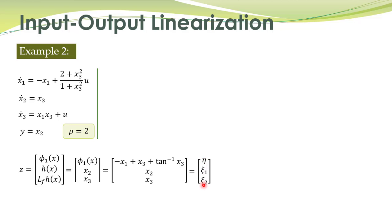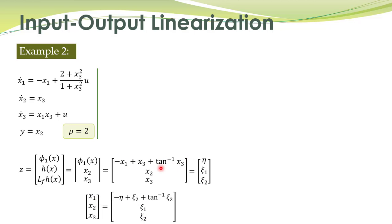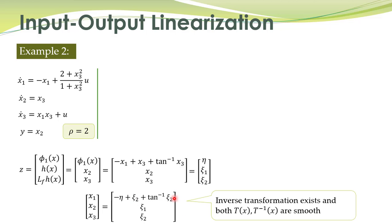The state variables are named eta, xi1, xi2 as before. The inverse transformation shows x2 equals xi1, x3 equals xi2, and x1 is obtained by rearranging phi_1. The inverse transformation exists and is smooth. We then compute eta-dot, which is the derivative of phi_1, making substitutions for x1-dot and x3-dot.